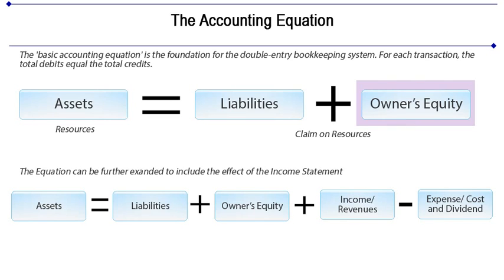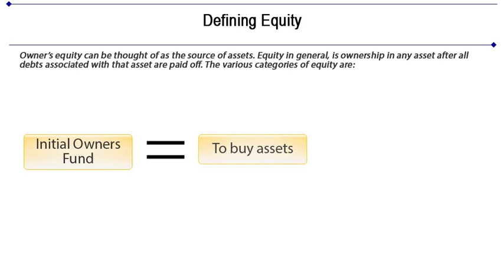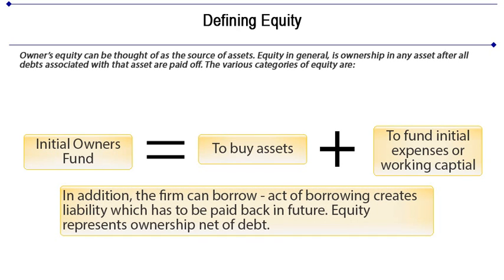Let's talk about equity. Owner's equity can be thought of as the source of assets. Equity in general is ownership in any asset after all the debts associated with that asset are fully paid off. Equity in the firm and individual business is the cash that the owner brings in to buy assets and provide for working capital. At the start of the business, the owner puts some funding into the business to finance the operation. This creates a liability on the business in the form of capital, as the business is a separate entity from its owner. After liabilities have been accounted for, the positive remainder is deemed the owner's interest in the business.